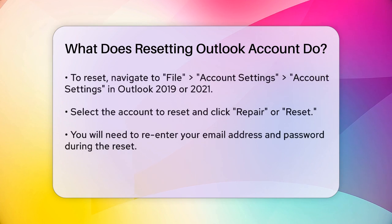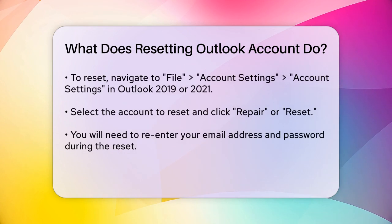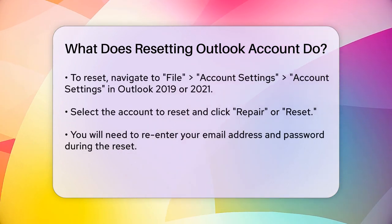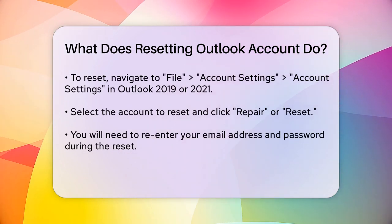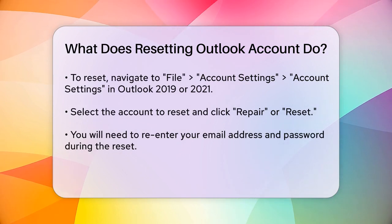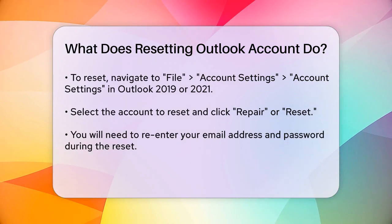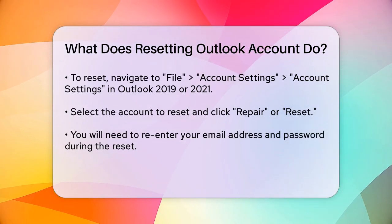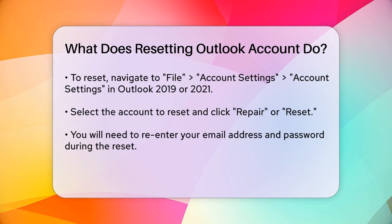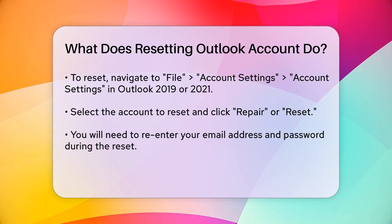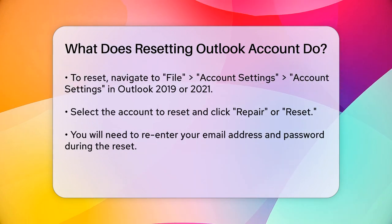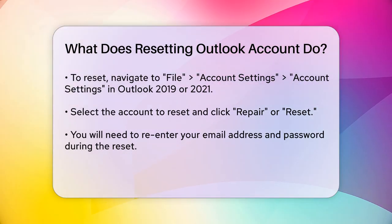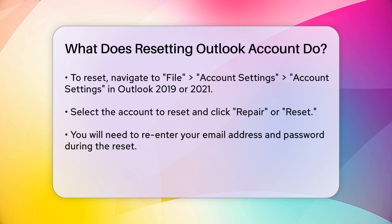To reset your Outlook account, you typically go to the account settings within Outlook. For example, in Outlook 2019 or 2021, you would go to File, Account Settings, Account Settings again, then select the account you want to reset and click Repair or Reset.